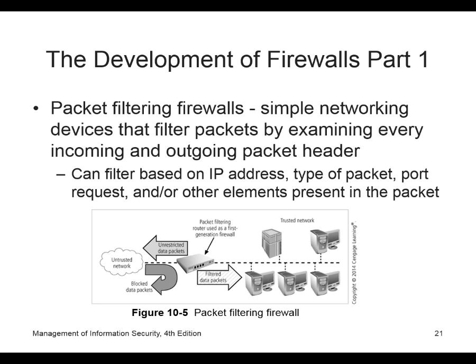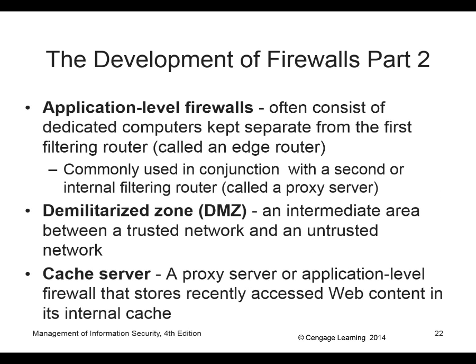Application-level firewalls are often associated with dedicated computers — now we're really looking at the application layer and what they are actually doing. A demilitarized zone — we have an email server here that's behind the firewall, so some traffic is allowed through the firewall into the email server, into the demilitarized zone. That way it's gone through some filtering but some stuff is still being allowed through — it's an intermediate area.